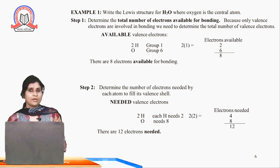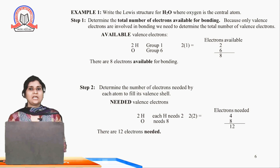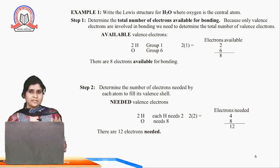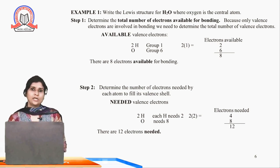Step 2: we will see the needfulness — how many electrons they need to form the bond. Hydrogen has 1 electron each, so each hydrogen atom needs 2 electrons to complete its valence, meaning 4 electrons for 2 hydrogen atoms. Oxygen needs 2 more electrons in its outermost shell since 6 are already present, requiring 8 electrons total. So 4 electrons for hydrogen plus 8 electrons for oxygen gives a total of 12 electrons needed.